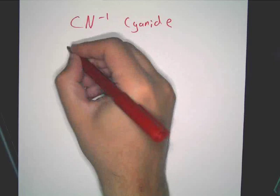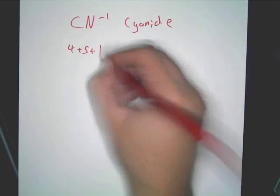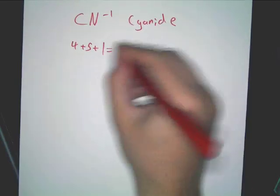But if you do valence first, carbon's got four, nitrogen has five, you've got a negative one, so you go plus one. That gives you ten electrons.